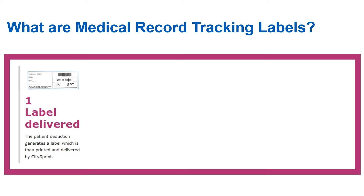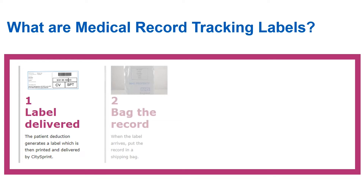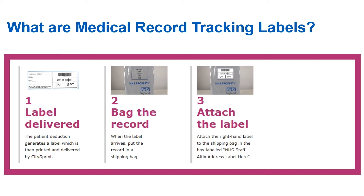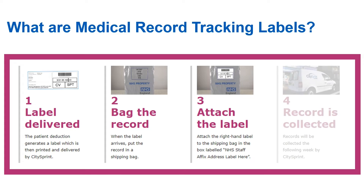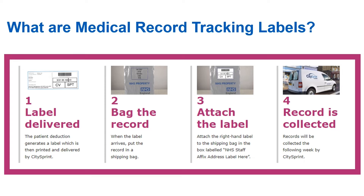You will be able to see the details for patient moves in your records out tab in PCSE Online, which I will guide you through soon. When the tracking label arrives, locate all parts of the paper medical record and put the record in a shipping bag. Attach the right hand label to the shipping bag in the box labelled 'NHS staff affix address label here'. Records will then be collected the following week by CitySprint, but please be aware that CitySprint will only collect shipping bags with the transit label affixed. It is important for the medical record to be sent to the new practice as soon as possible so patient care is not affected, and it also ensures that the records are up to date at your GP practice.